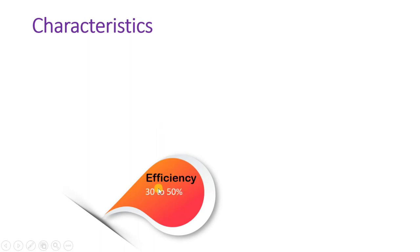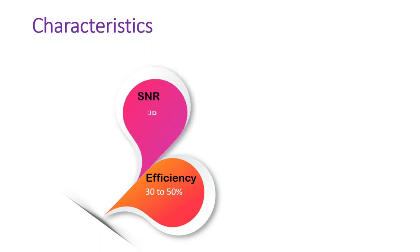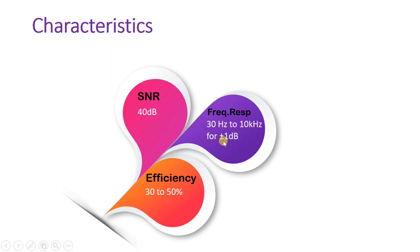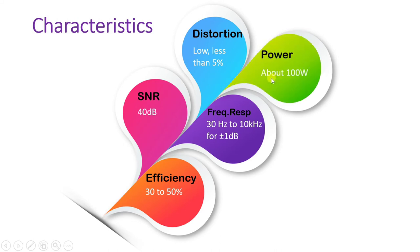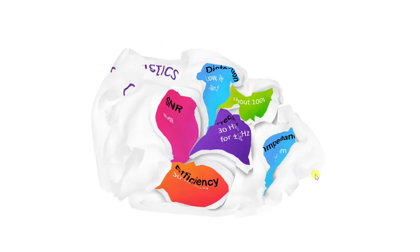The key characteristics of horn type loudspeaker are: efficiency is about 30 to 40 percent, compared to 5 percent for cone type. SNR is about 40 dB, far better than cone type which is about 30 dB. Frequency response is far better — about 30 Hz to 10 kHz. Distortion is less than 5 percent, compared to about 10 percent for cone type. Power handling capacity is better at about 100 V, and impedance is 16 ohms.